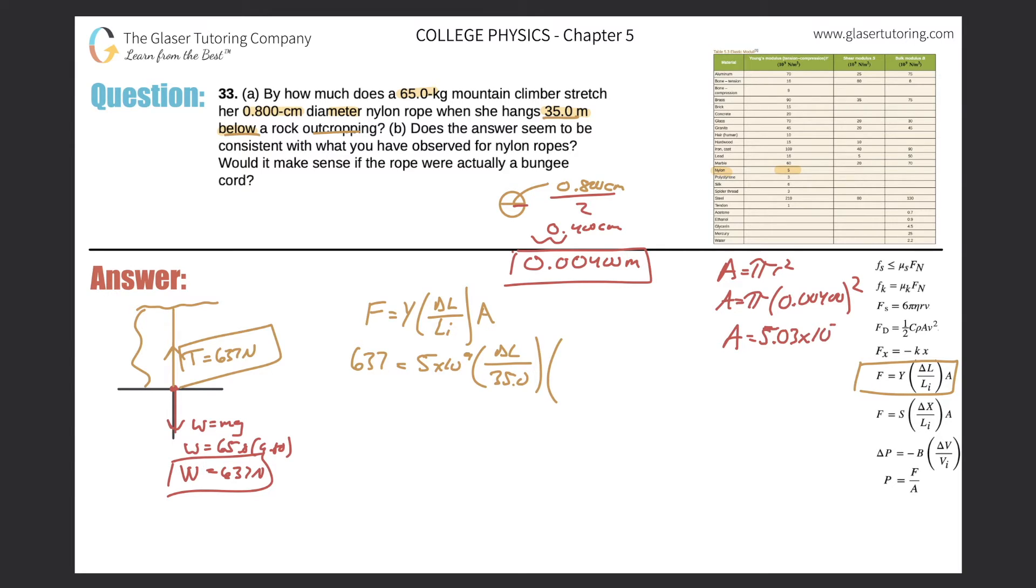All right, so let's plug that value in for the cross section area here. So 5.03 times 10 to the minus 5. Let's clean this baby up.